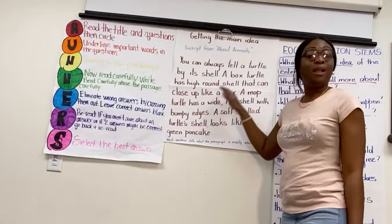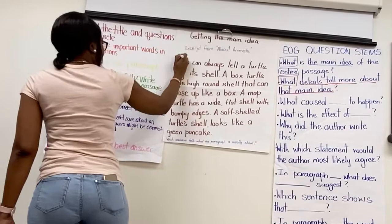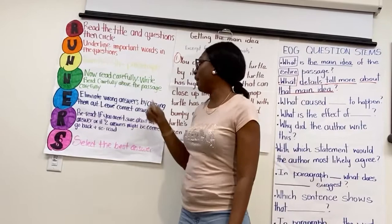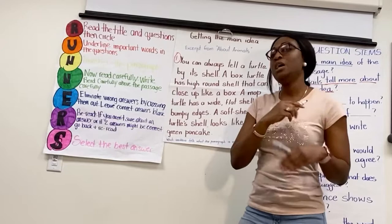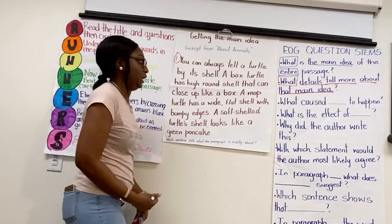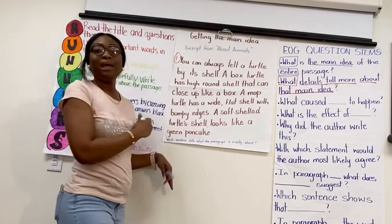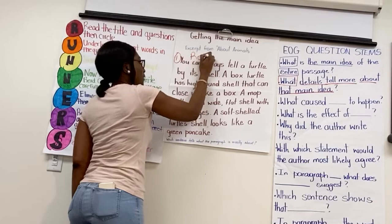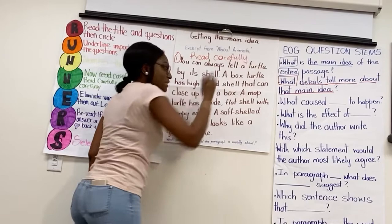Now I go to my N, which is number the paragraphs. Luckily, in this passage we only have one paragraph. So I'm going to go ahead and do number one — one paragraph. Now it says read carefully. I'm going to write 'read carefully' above the passage to remind myself, which is also annotating, or small notes on the side — in this case, small notes on the top. So I'm going to write: read carefully.